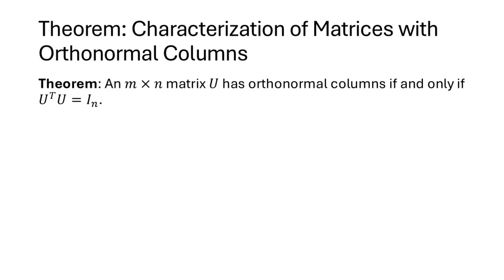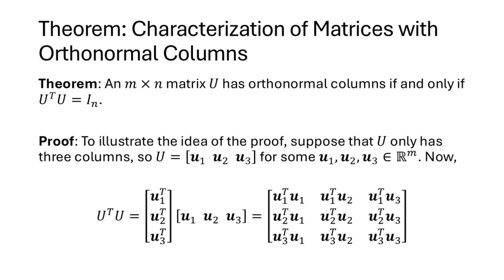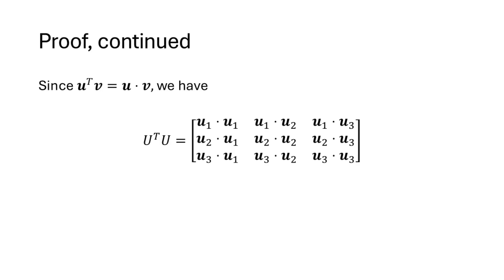It turns out that when we have an n by n matrix U with orthonormal columns, that happens if and only if U transpose times U equals the n by n identity matrix. Let's illustrate this proof using the case where U has three columns — u1, u2, and u3. The rows of U transpose are the same as the columns of U, and multiplying gives a three by three result whose entries are the pairwise dot products of the u vectors.